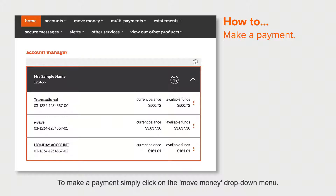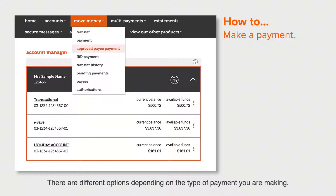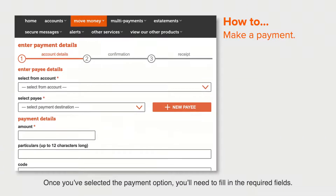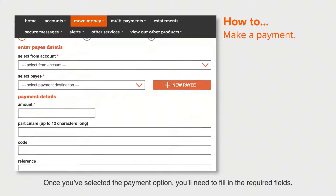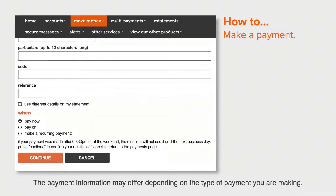To make a payment, simply click on the move money drop down menu. There are different options depending on the type of payment you are making. Once you've selected the payment option, you'll need to fill in the required fields. The payment information may differ depending on the type of payment you are making.